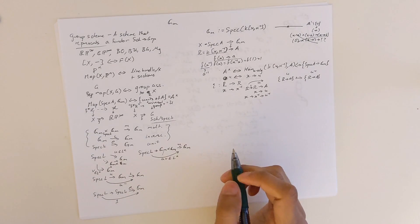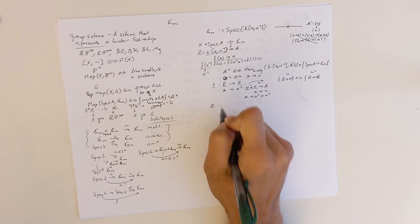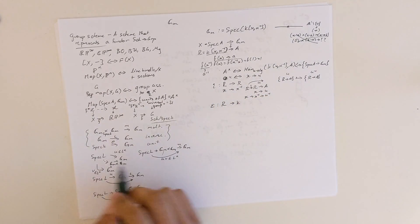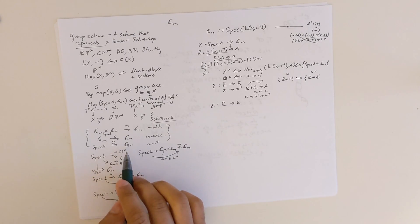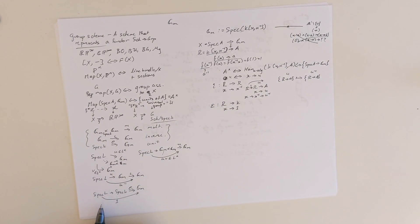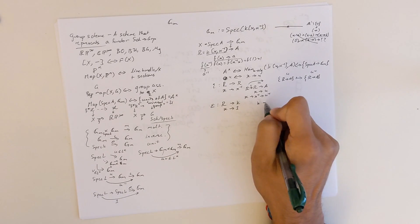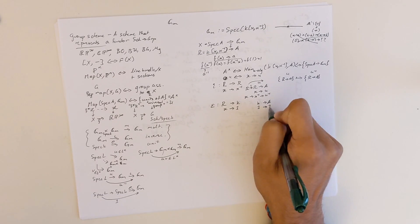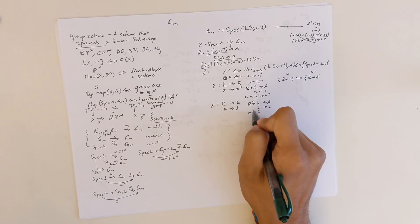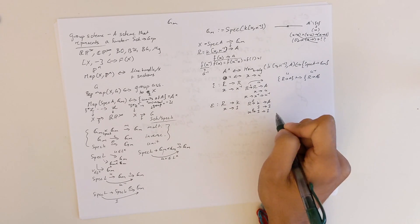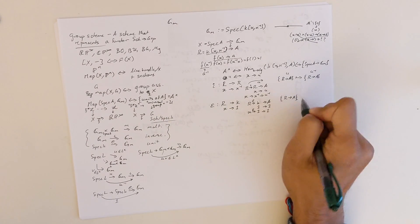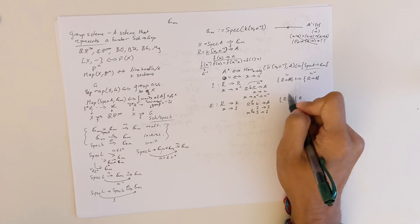For the unit: I'll call this map epsilon. It should be a map from R to k, sending x to the element 1. This corresponds to a map from spec k to G_m. Since any scheme over spec k has a unique structure map from k to A sending 1 to 1, composing through epsilon gives a map from R to A where x maps to 1 — this is the unit element of our group.